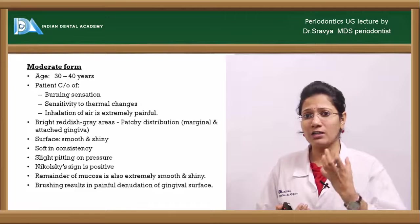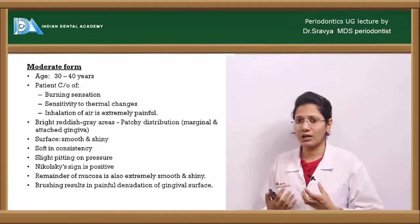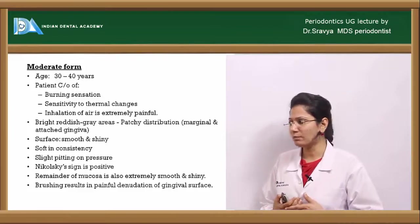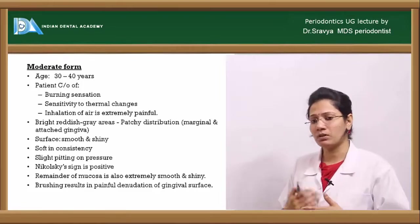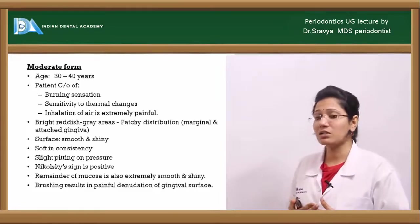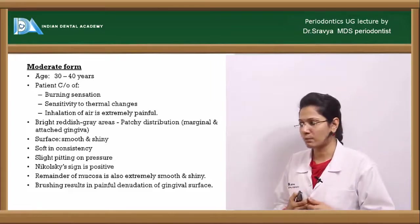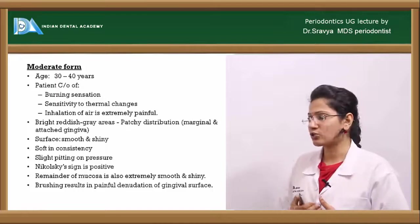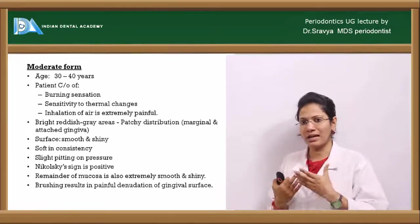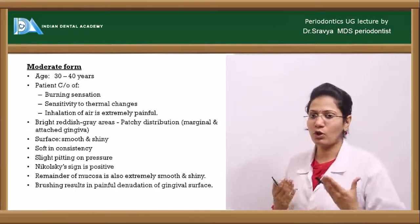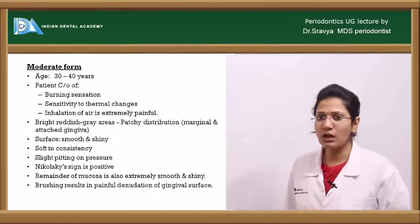In the moderate form, clinical signs include bright red grayish areas of the gingiva with patchy distribution of hemorrhagic areas. The surface looks smooth and shiny, consistency is soft, there is a positive Nikolsky sign with slight pitting on pressure, and the remainder of the mucosa is also smooth and shiny. Brushing results in painful ulcerations.